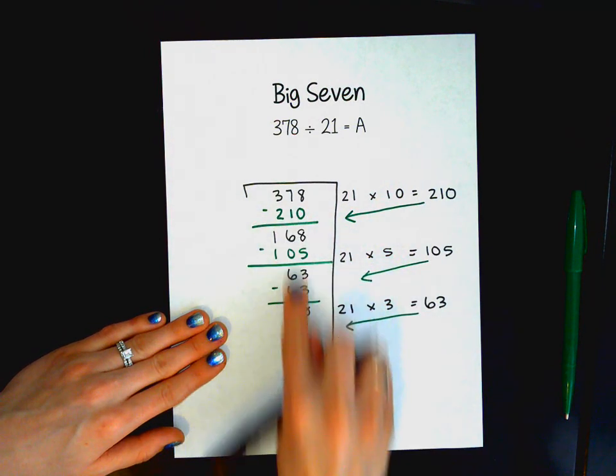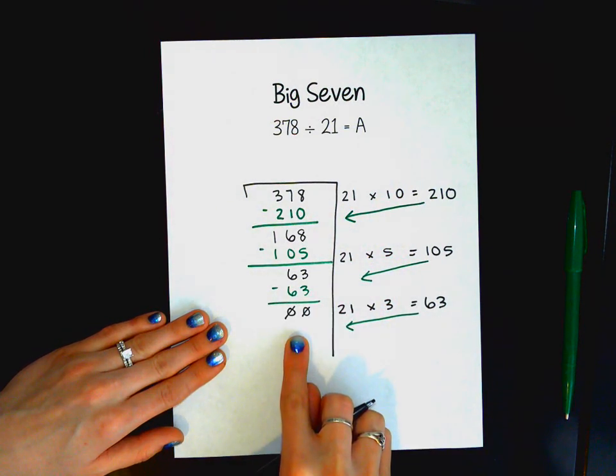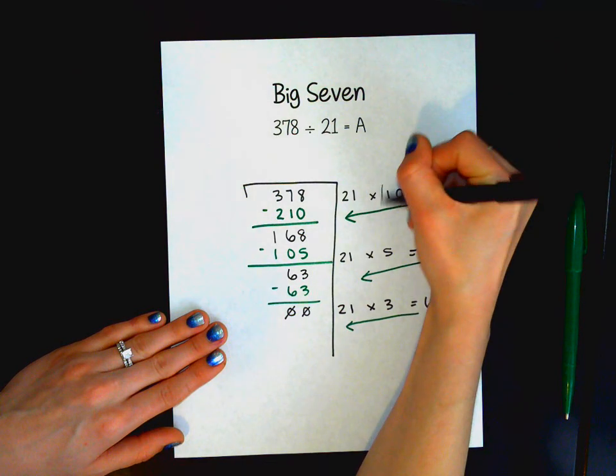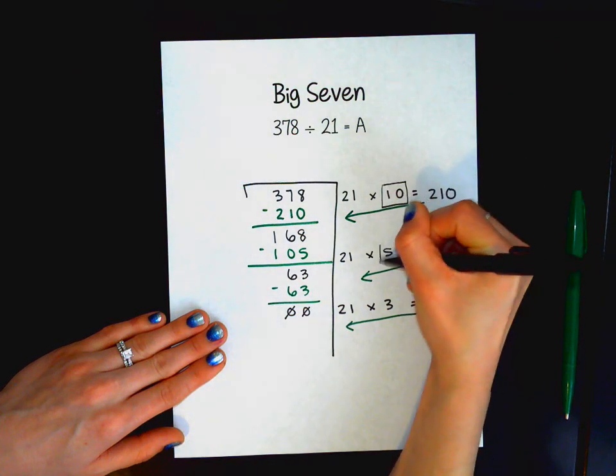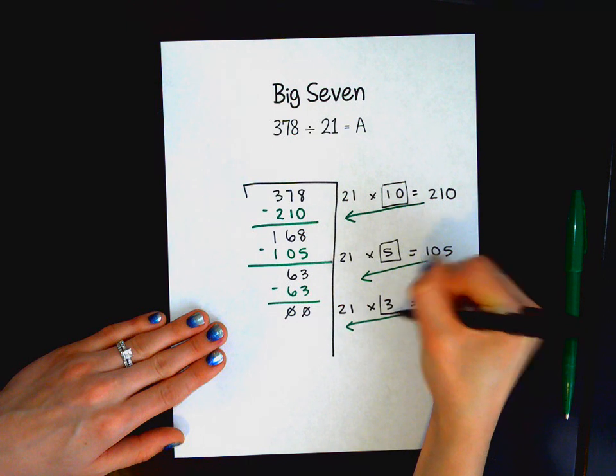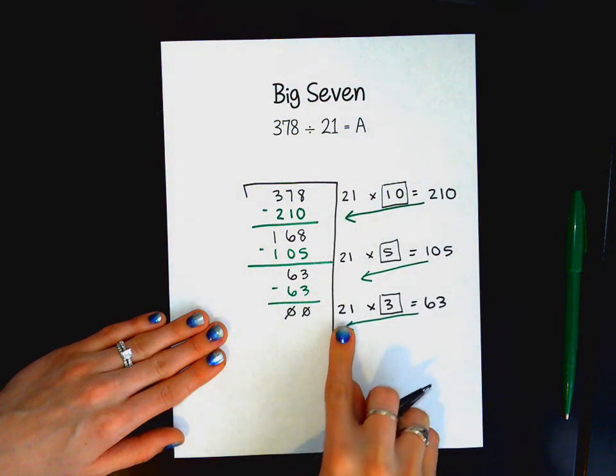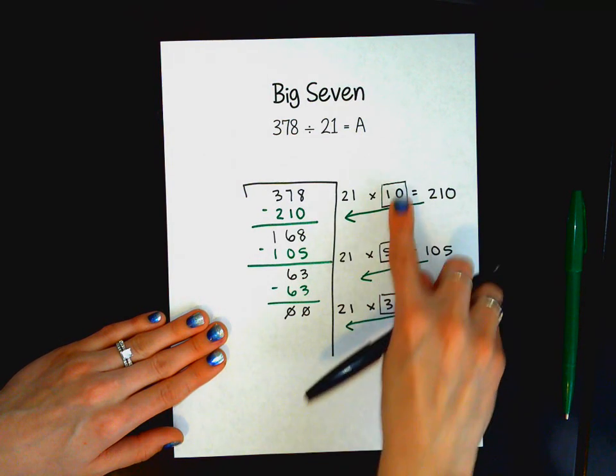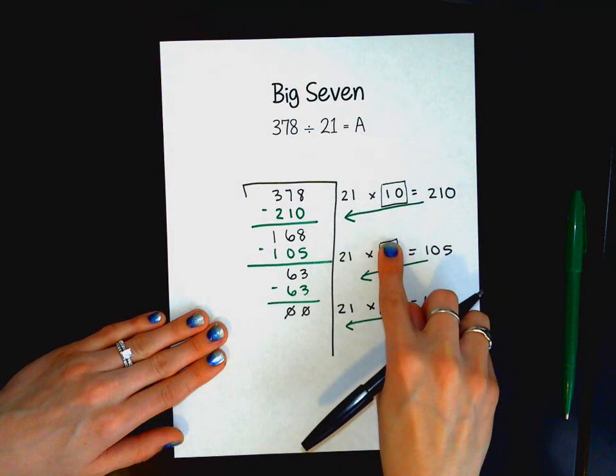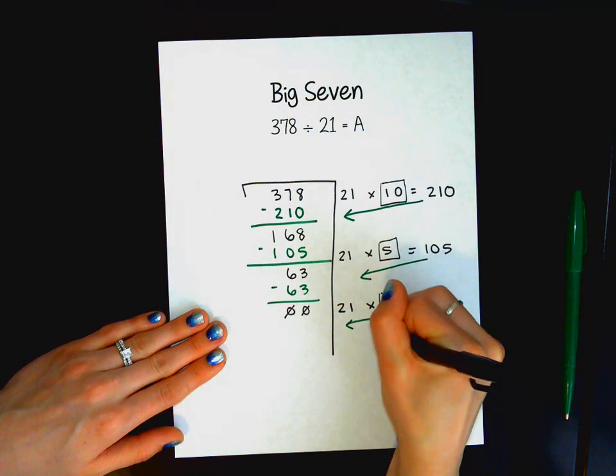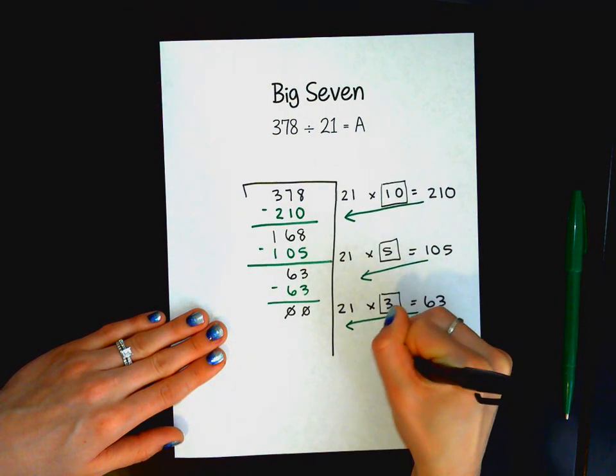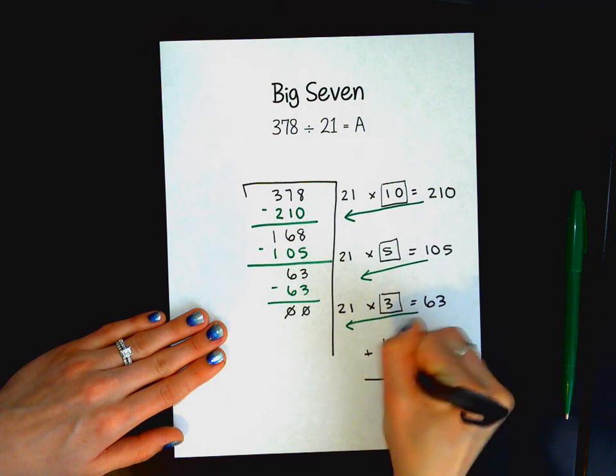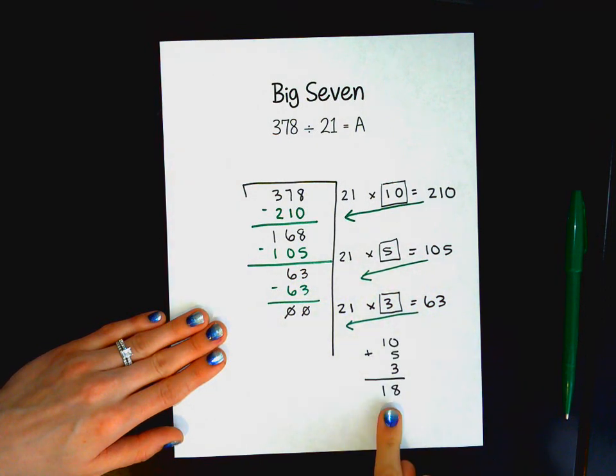Okay, once you have taken this and gotten it all the way down to 0, your next task is going to be to add up whichever factors that you multiplied 21 by. So Big Seven is using the inverse operation to help solve. So now I know that I've added 10, 5, and 3. And when I add those things together, I get 18.